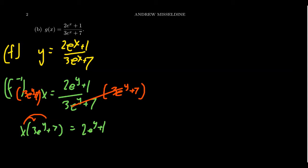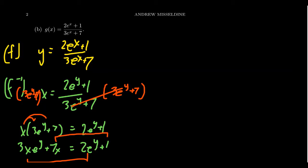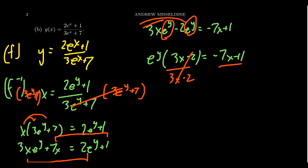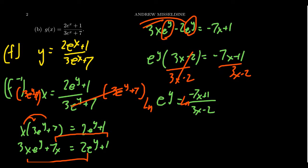Distributing the x: 3xeʸ + 7x = 2eʸ + 1. Combining like terms, move all multiples of eʸ to the left and everything else to the right: 3xeʸ − 2eʸ = −7x + 1. Factor out eʸ: eʸ(3x − 2) = −7x + 1. Divide both sides by (3x − 2), giving eʸ = (−7x + 1) / (3x − 2). To solve for y, take the natural log of both sides: y = ln((−7x + 1) / (3x − 2)).